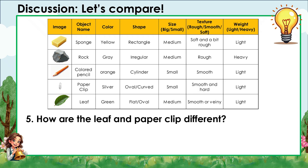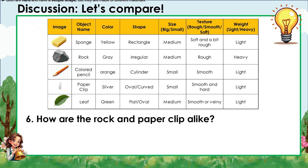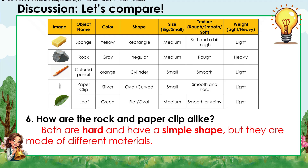Question 5: How are the leaf and paper clip different? The leaf is natural, soft or veiny, and medium in size, while the paper clip is metallic, hard, and small. Question 6: How are the rock and paper clip alike? Both are hard and have a simple shape, but they are made of different materials.